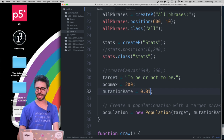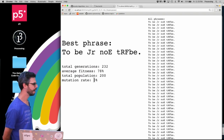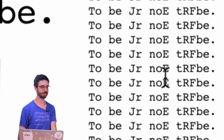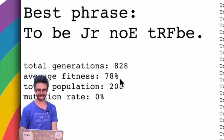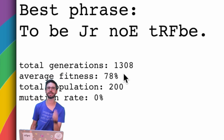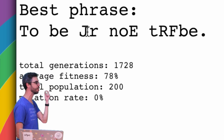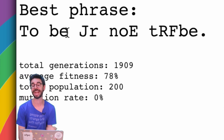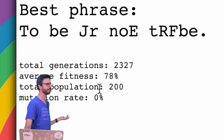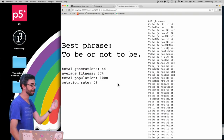I'm going to go back to 'to be or not to be,' take the mutation rate and make it zero, and run this again. Notice what's going on — all the members of the population actually have exactly the same sequence of characters, the best phrase is not changing, and the total generation just keeps going up. With no mutation there was not enough variation at the start to actually evolve the phrase — there was no initial member of the population with an 'O' as the seventh character. But if I make the total population a thousand instead of 200, we actually got to the best phrase.